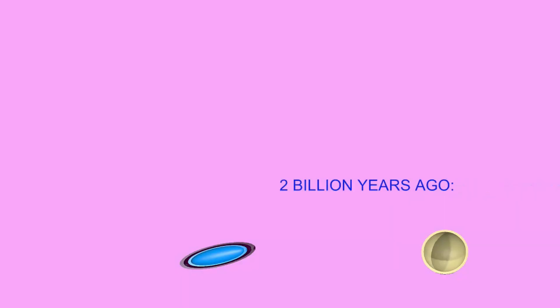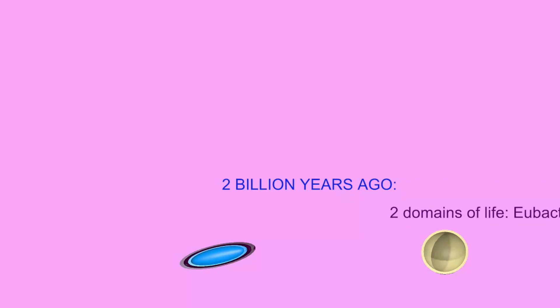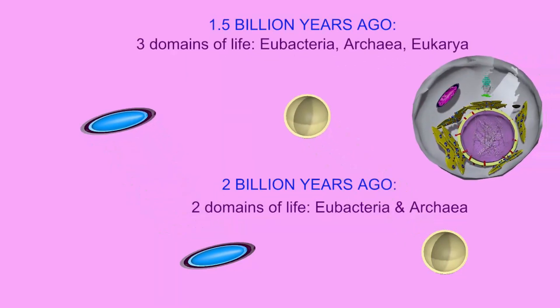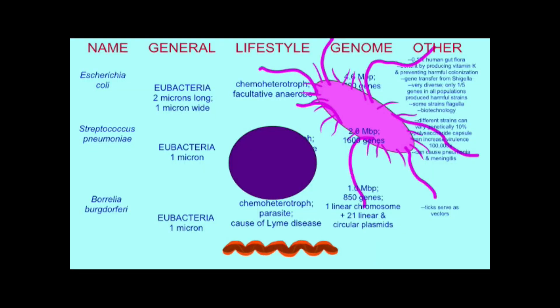However, by 1.5 billion years ago, there were three domains of living things on Earth: the eubacteria, the archaea, and the eukaryotes. How could this have happened? How could a world filled only with small, simple prokaryotes then become a world which includes larger, complex eukaryotes?